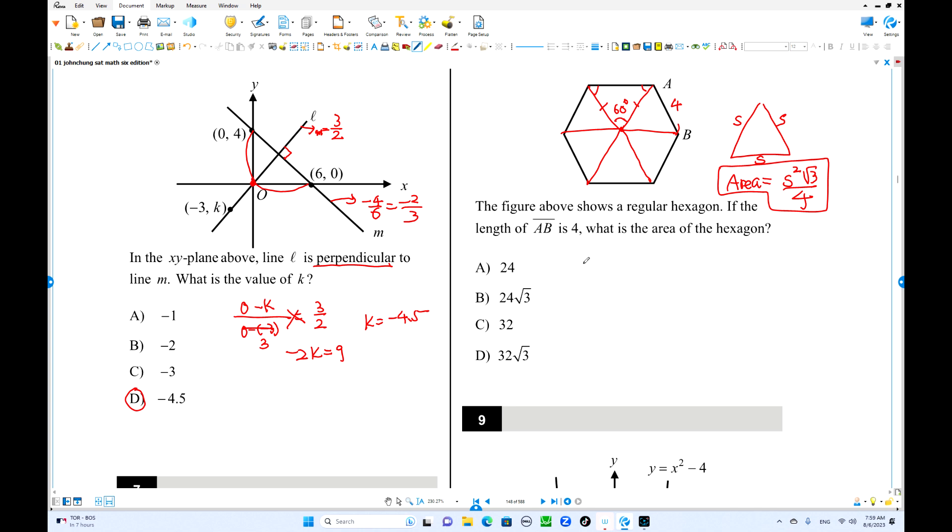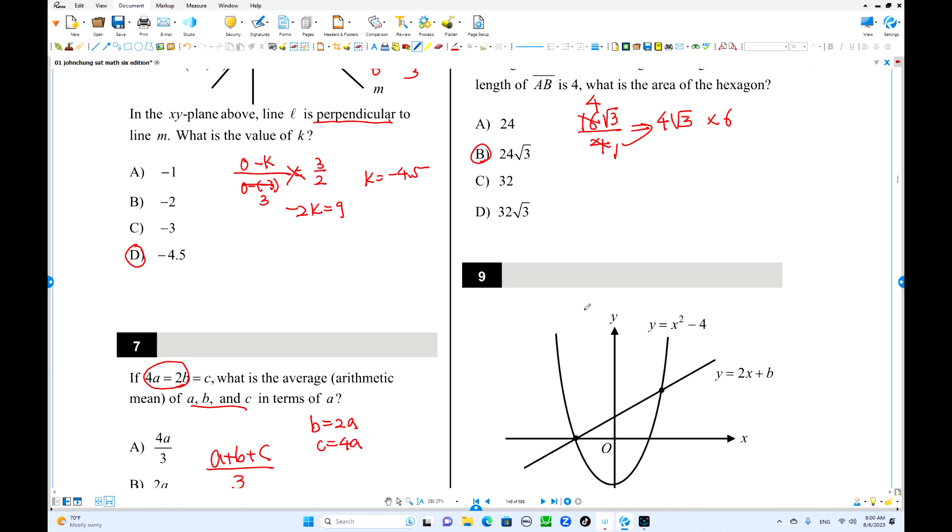S is 4 now. 4 square is 16 square root 3 over 4. That is the area of this one equilateral triangle. 4 root 3. But we have 6 of this times 6. 24 square root 3 is the answer.